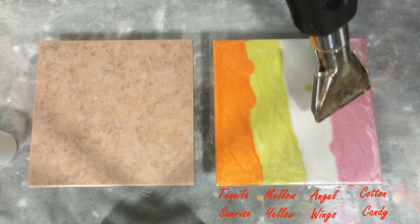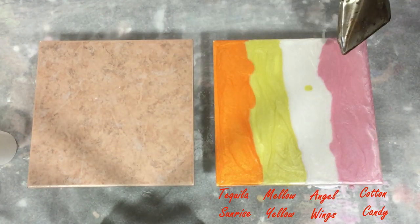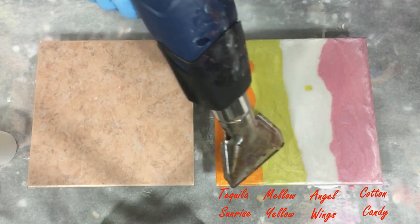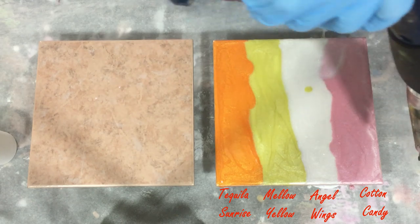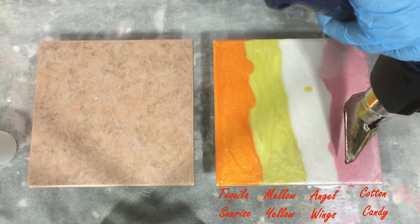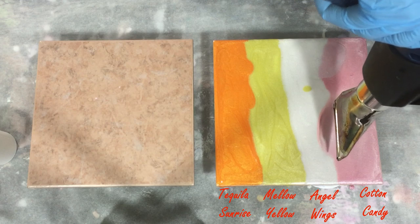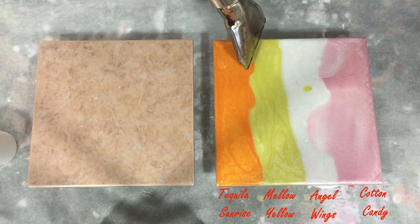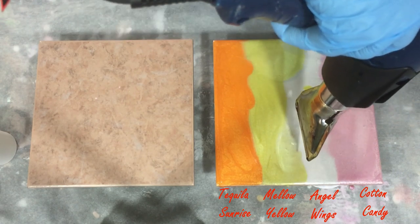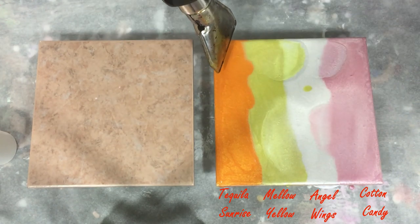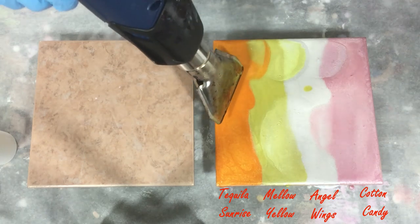I'm going to put some heat onto the colors to see what they do. Trying to blow the angel wings over the cotton candy, and also the mellow yellow over the angel wings, and the tequila sunrise.